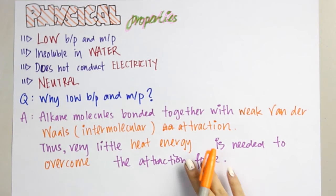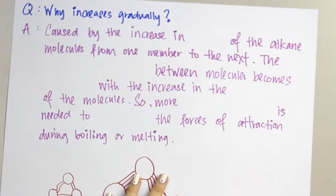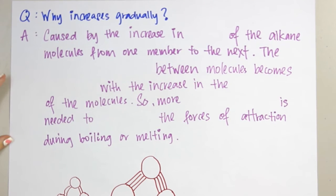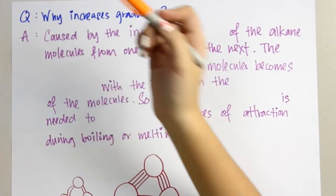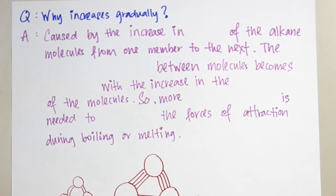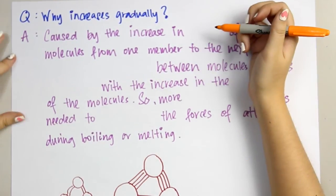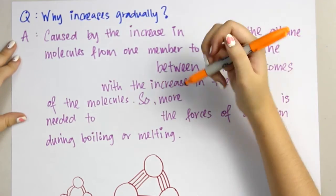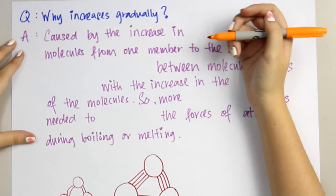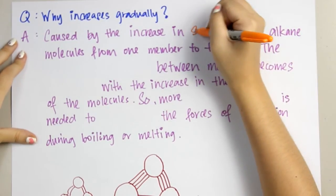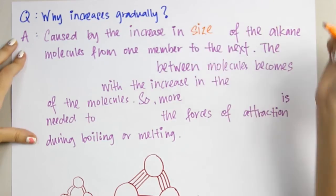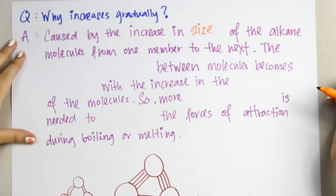For the second question: why do alkane compounds increase gradually? To answer this question, you just need these few points. The first point is: it is caused by the increase in the size of the alkane molecule from one member to the next.